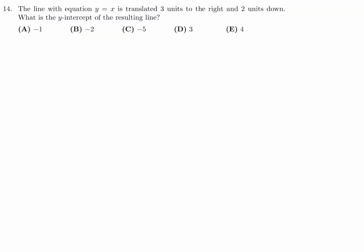Translated three units to the right and two units down. What is the Y-intercept of the resulting line? So we've got, let's say, this line right here. And we've got the line Y equals X. So obviously that's the one that goes right through like that. Then we're taking this and translating three units to the right. So approximately, let's say here. Three units to the right, so that is three.